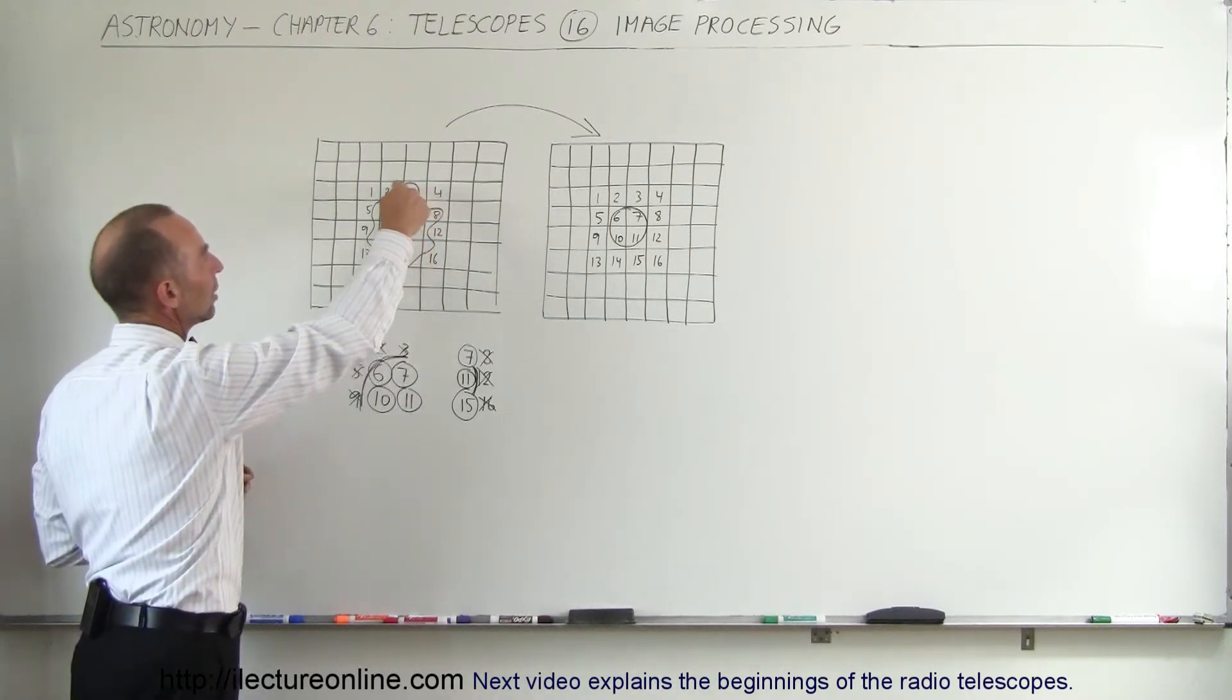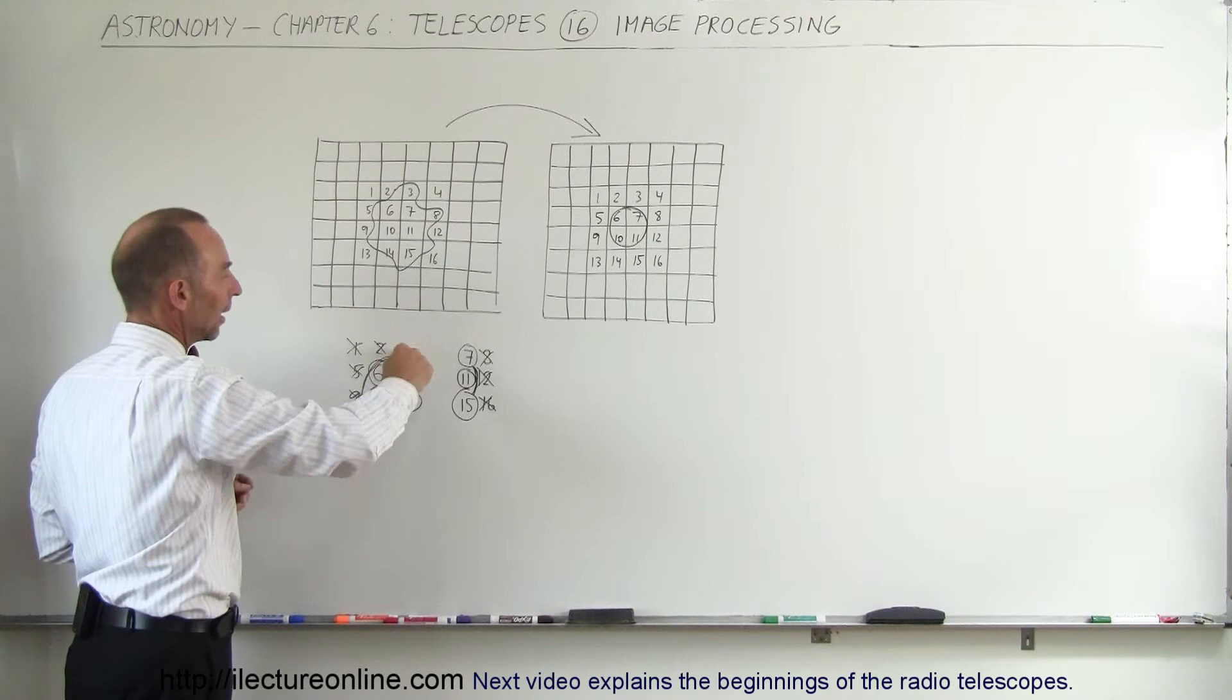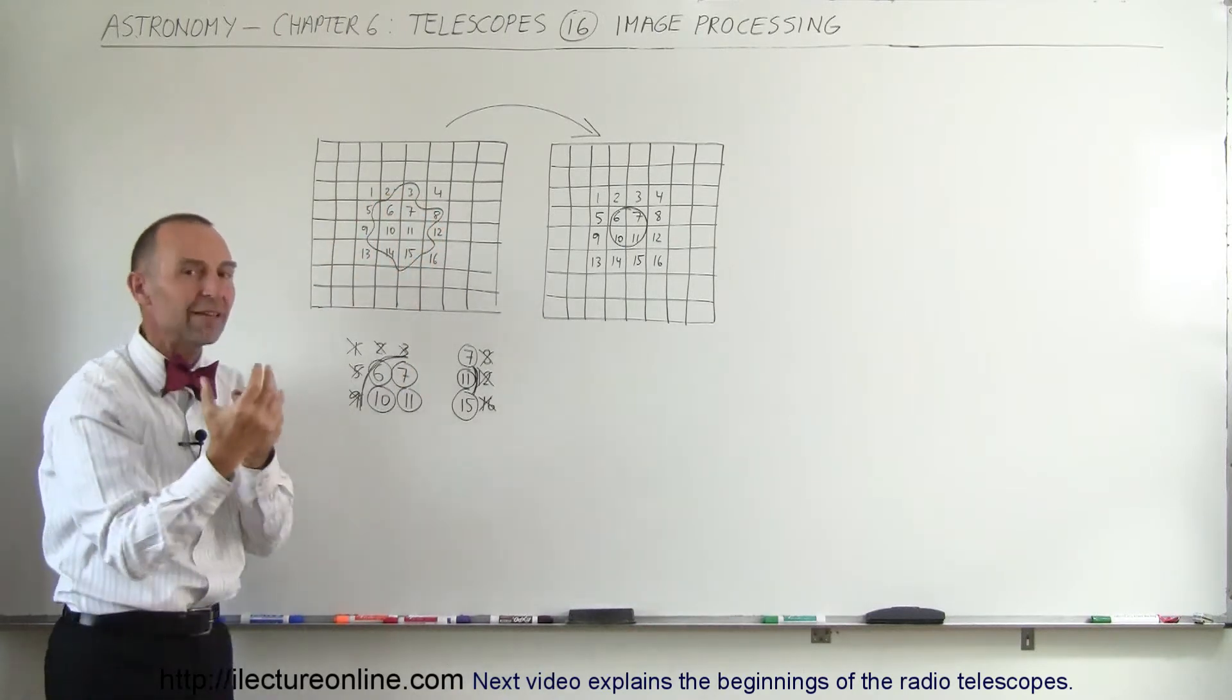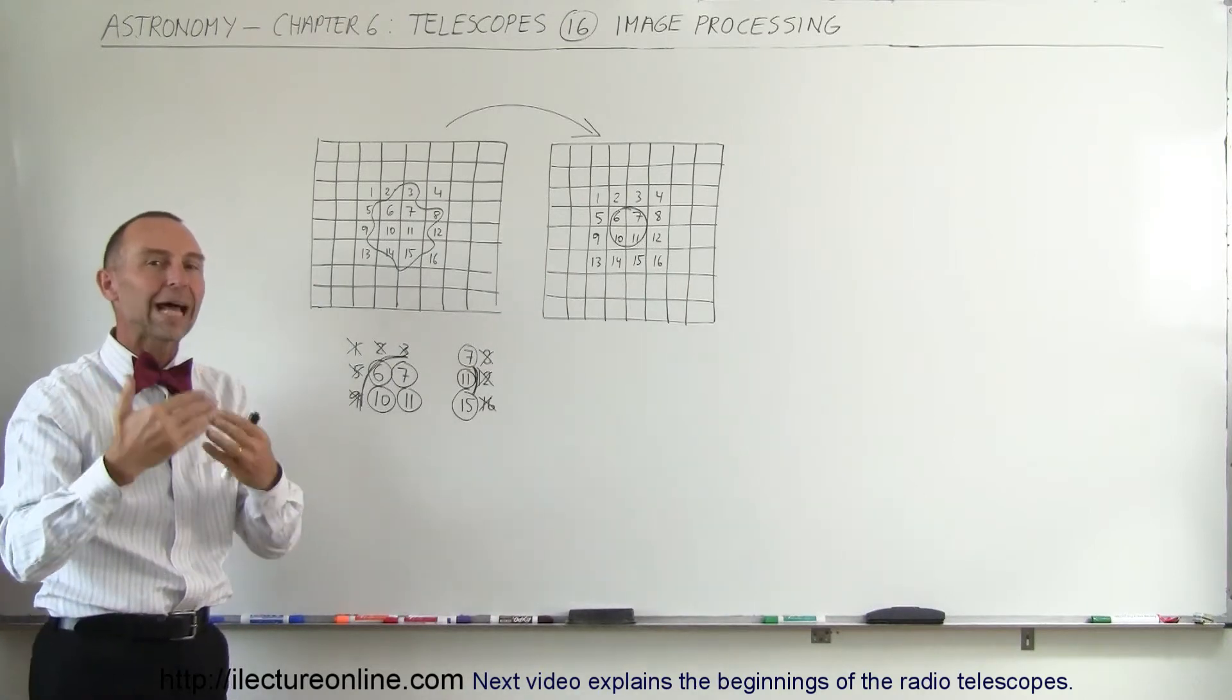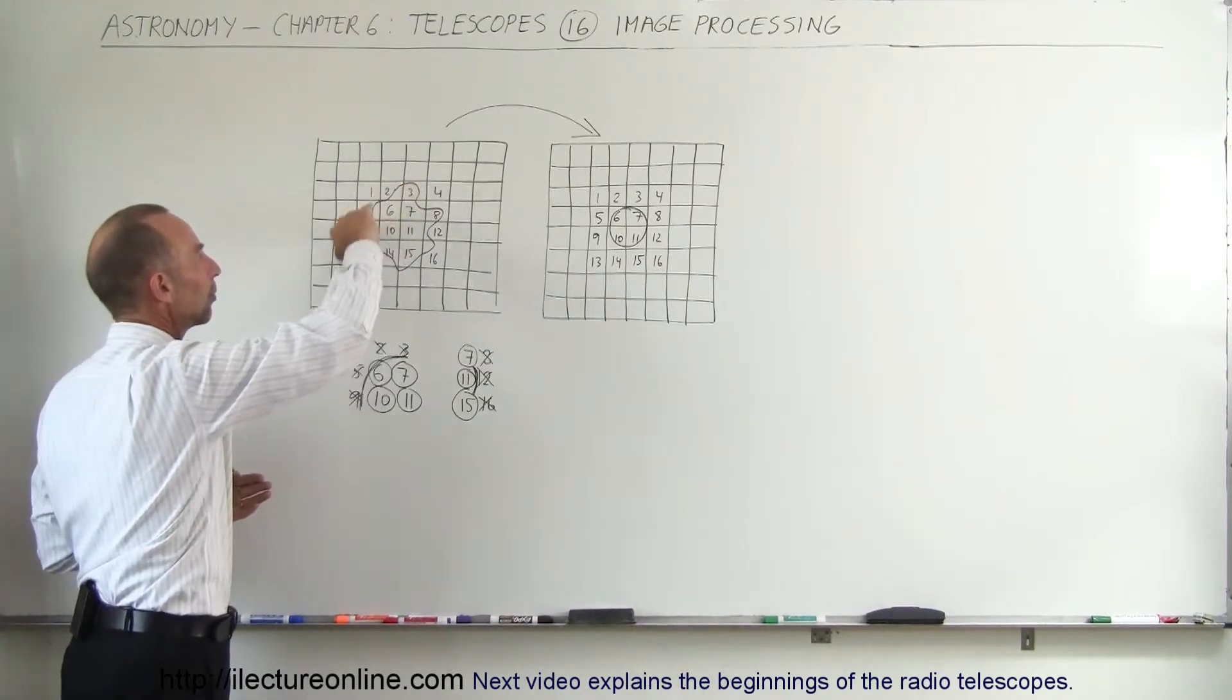But if we look at number 3, 2, 1, 5, and 9 on the outside, you can see they only have a partial influx of energy. Therefore we reject that, saying those are not relevant to the picture.